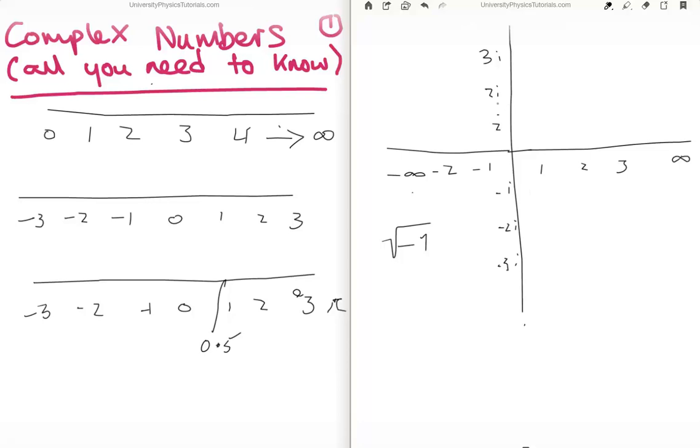So instead of having an infinite number line, now we have an infinite number plane and we call this an argand diagram.